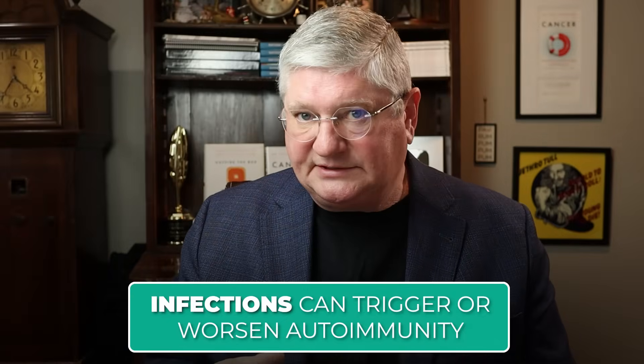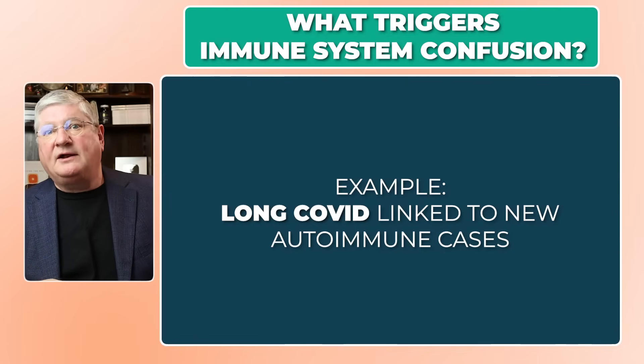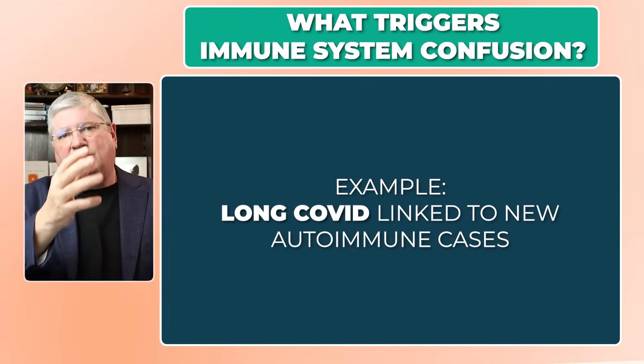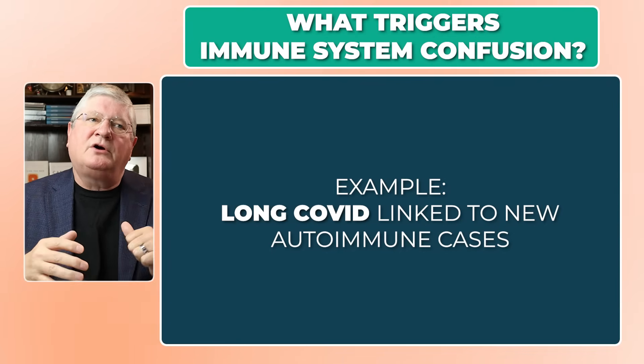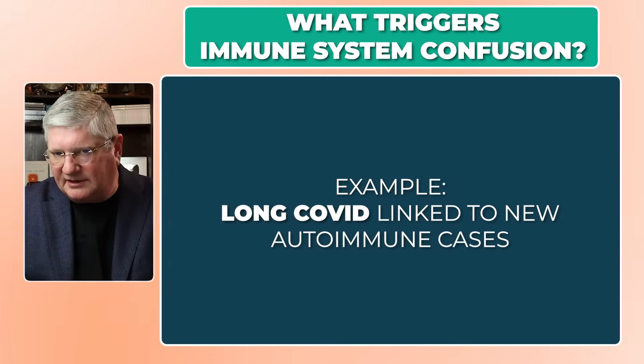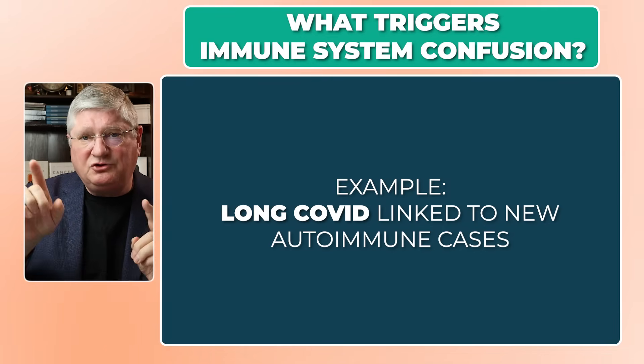Infections can cause this. Lots of infections can trigger autoimmunity. Viral infections are one of the more well-known and common things, but parasites and bacteria can trigger autoimmunity as well. One thing we've seen in recent years through the pandemic is people with long COVID who never had autoimmunity who now do. Did the viral infection cause the autoimmunity, or did it deregulate the immune system enough to push you into autoimmunity you were probably going to get anyway? Maybe a little bit of both.